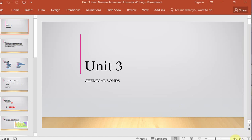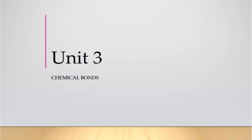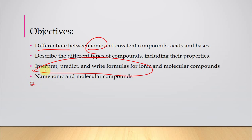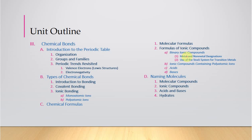Hi everyone, this is the video from Module 3 on ionic compounds. We're going to be working on both nomenclature and formula writing. We're going to be dealing with ionic compounds — we talked before about how to differentiate them — and now we'll look at writing formulas and naming ionic compounds, including binary, polyatomic ion-containing compounds, and we'll also work a little with acids and bases.